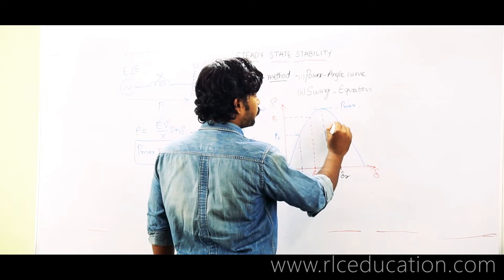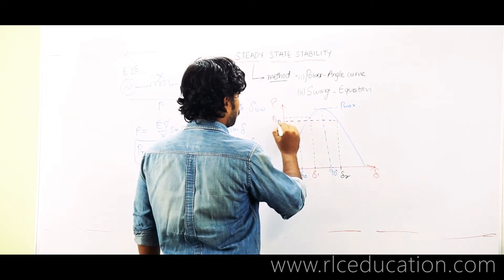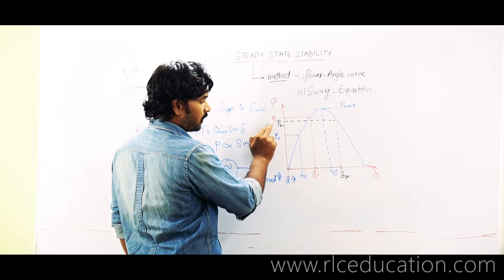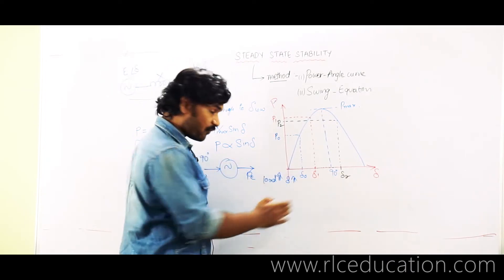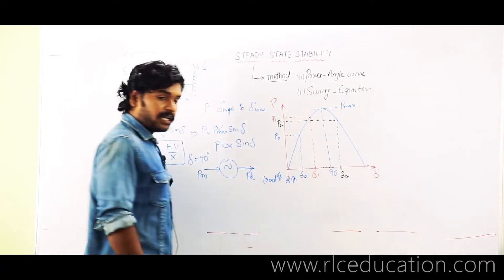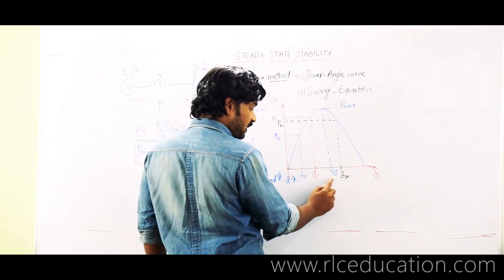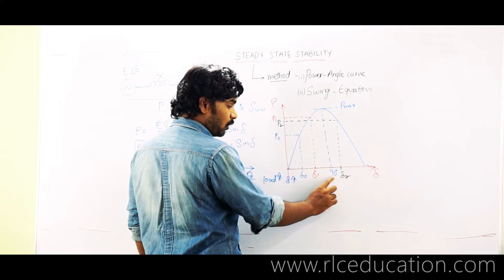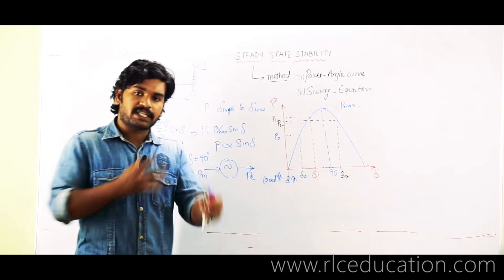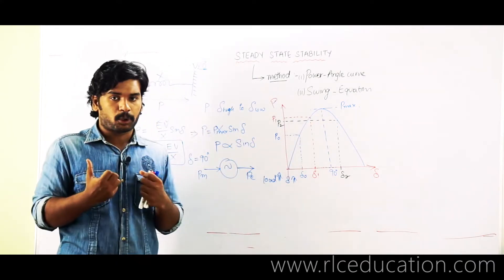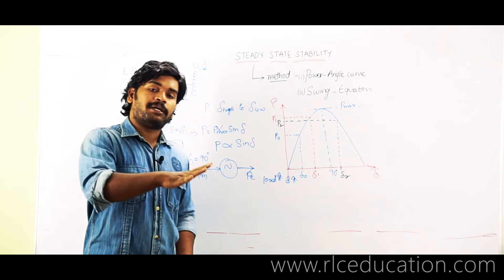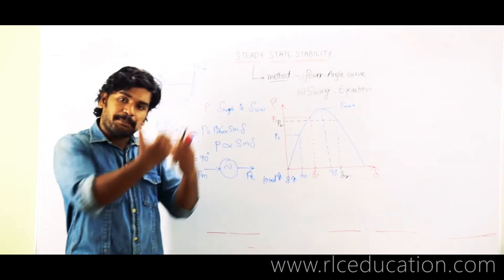The new power output corresponding to delta 2 is somewhere P2. Now you see: when the load was delta 1, the power output was P1. If I further increase the load from delta 1 to delta 2, should the power output increase? But the output has actually decreased — because you have increased the load beyond 90 degrees. If you were increasing the load up to 90 degrees, as the load increased, power output was also increasing. But now the generator is no longer increasing the power output; it is decreasing it.